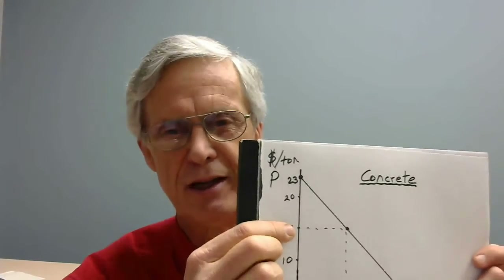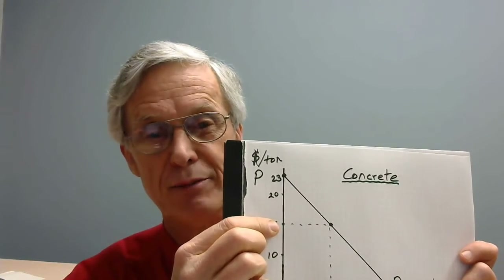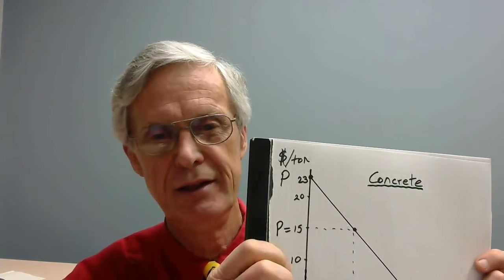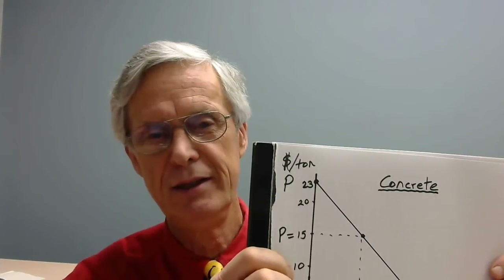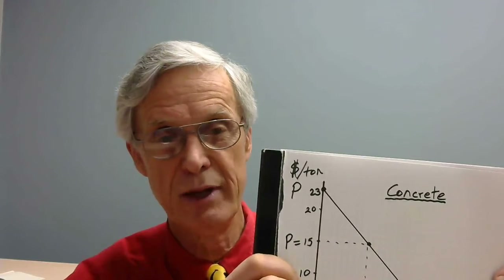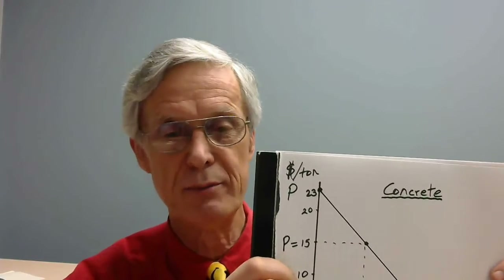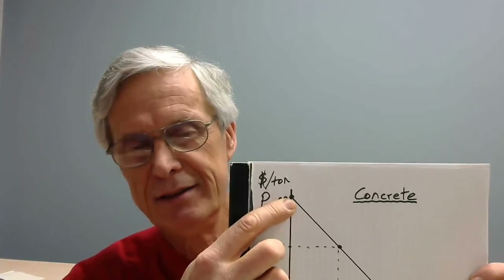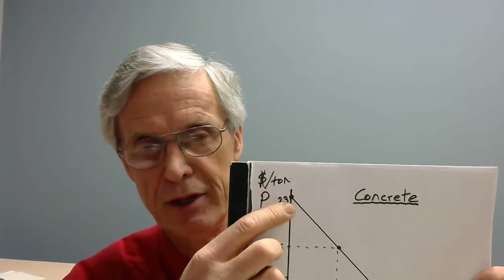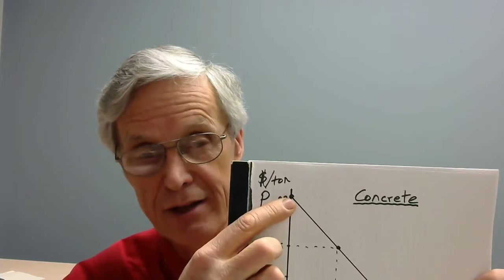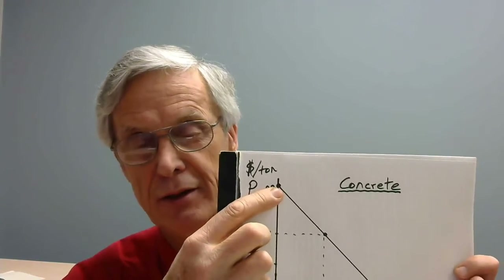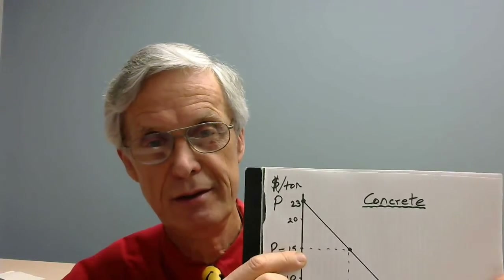Sometimes the demand line forms a straight line, but not always — it could be curved. Typically it's downward sloping because when things get more expensive people don't buy as much. Don't get that confused with supply, which is about producers. The supply line slopes upward, indicating that suppliers offer more for sale the higher the price. Demand is about buyers who want bargains — cheaper means they buy more. Suppliers want profits, so the higher the price the more they're willing and able to sell.